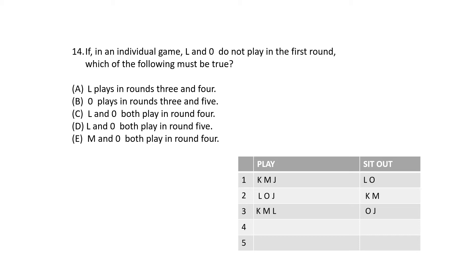Option C: L and O both play in round 4. Let's try this — L and O can't play in round 4, so option C is eliminated. Option D: L and O both play in round 5. I can see that we can't play in round 5 either.